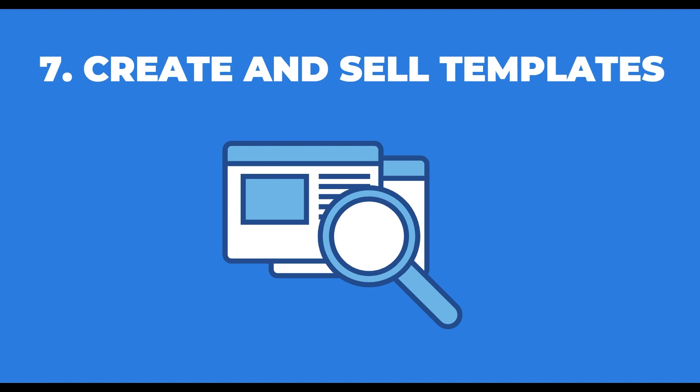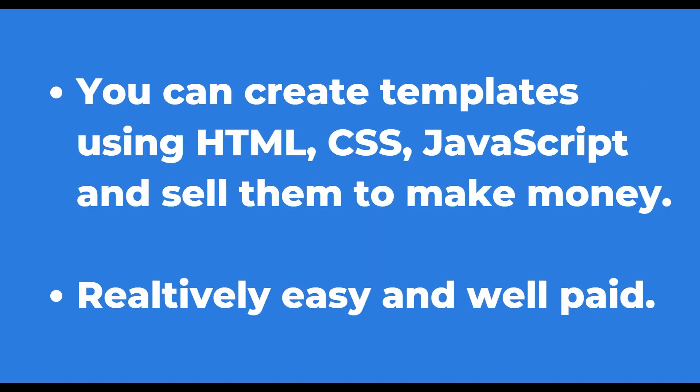The seventh stream of income is creating and selling templates. A lot of people want to get their website up and running quickly but struggle to find a beautiful template. Front-end engineers — and really any engineer with basic HTML, CSS, JavaScript knowledge, plus Bootstrap or Material UI — can create excellent front-end templates to sell. This is relatively easier and really well paid, since people don't mind paying more to make their website look beautiful.